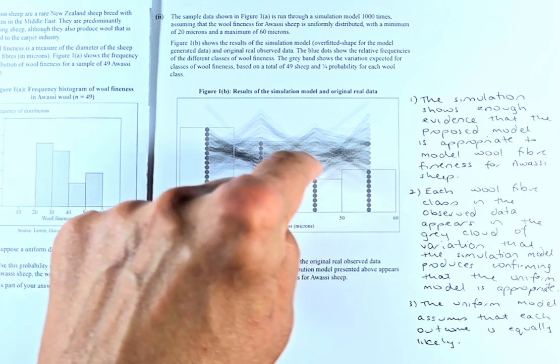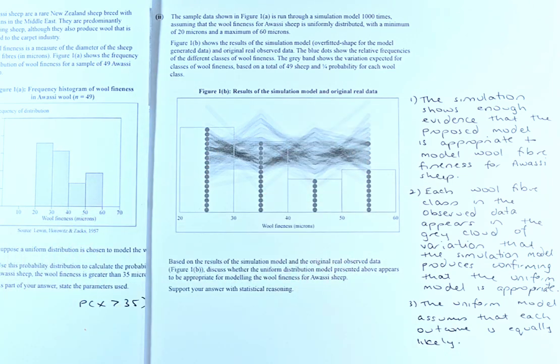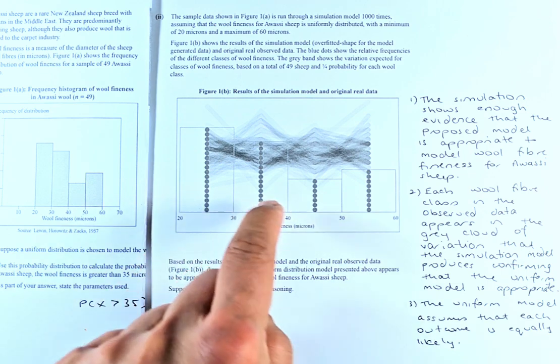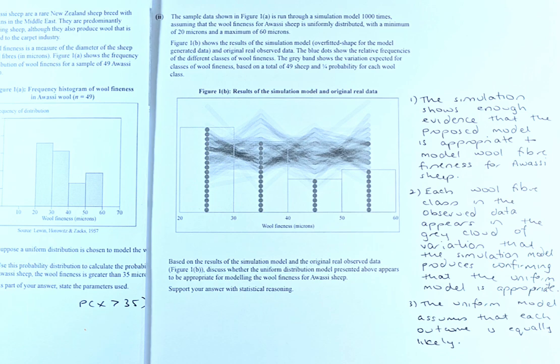The grey band, this grey band here, on the other hand, shows the variation expected for the classes of wool fineness. Based on the total of 49 ships and the one-quarter probability of each class, so there are four different classes, the chances of them is one-quarter each time.